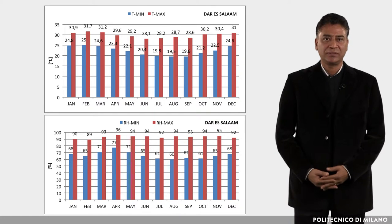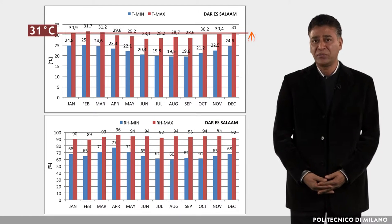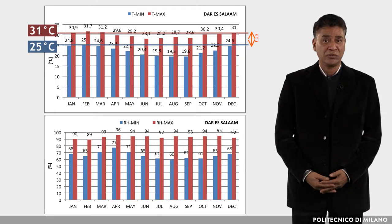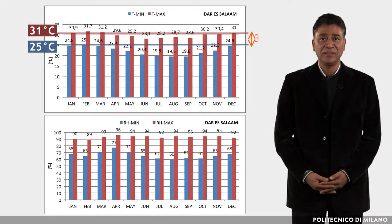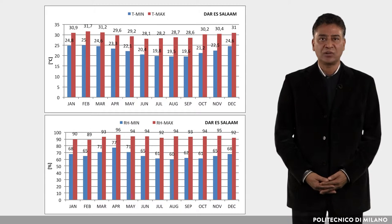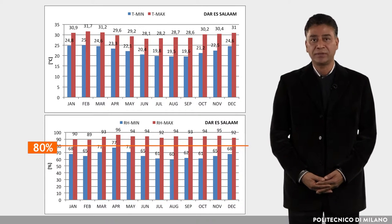For the hottest months, the mean maximum air temperature is about 31 degrees Celsius, the mean minimum is 25 degrees, and the mean swing is about 3 to 7 degrees. The mean relative humidity along the coastal area is about 80%.